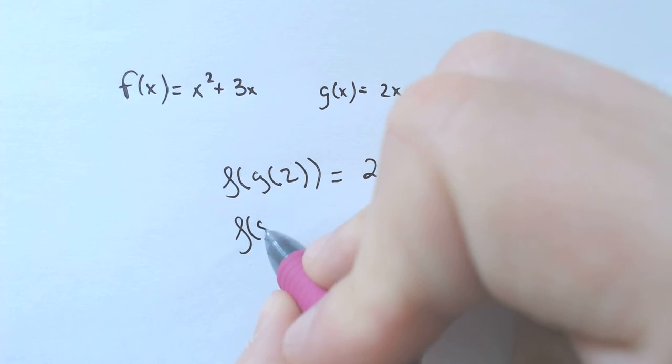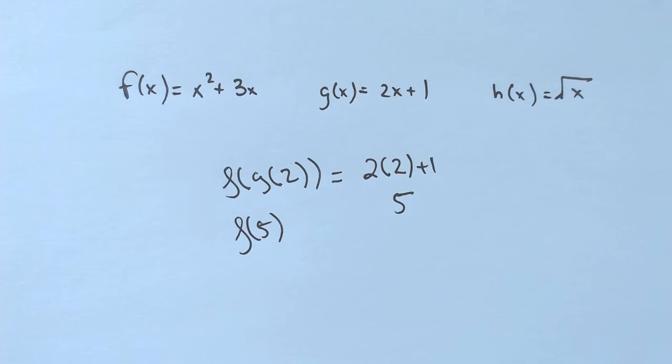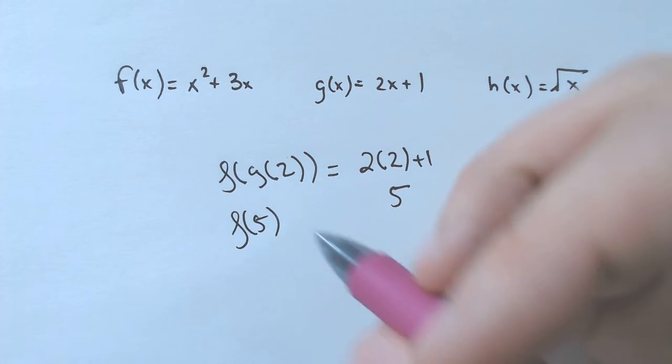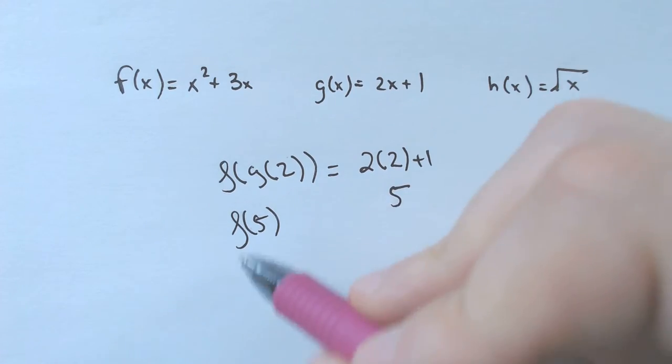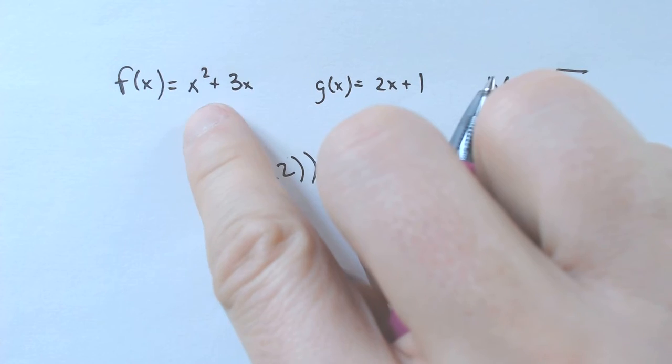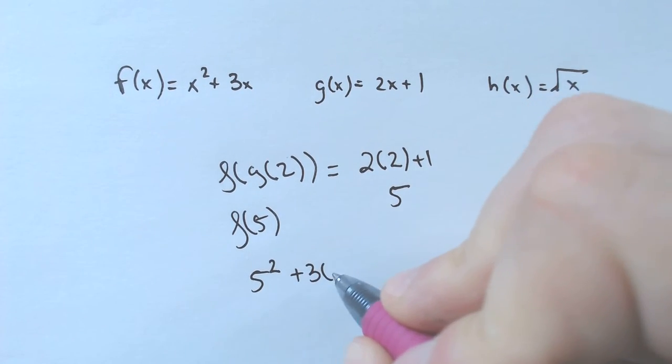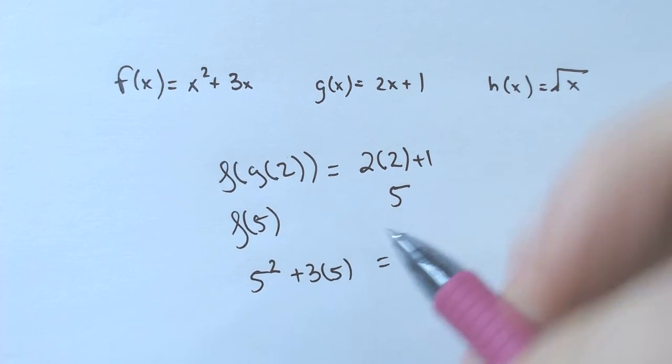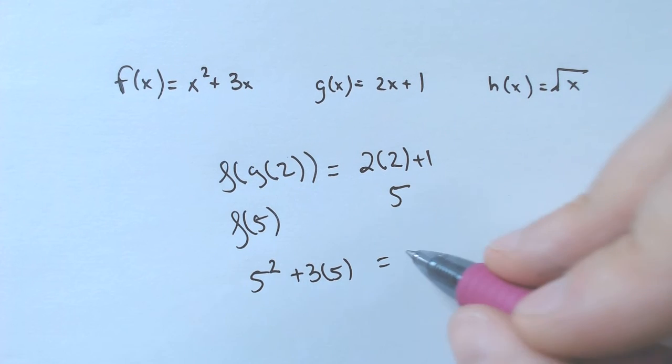And really, what you're doing now is figuring out what f of 5 is. So once we get that value of 5, you plug in the 5, which is going to be 5 squared, I'm plugging it into the f of x, plus 3 times 5, which ends up being 25 plus 15. 25 plus 15 is 40.